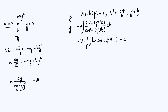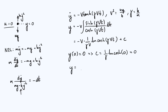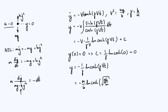We fix the constant using the initial condition y(0) = 0. Substituting, cosh(0) = 1 and ln(1) = 0, so the constant c = 0. Therefore y = −(1/γ)·ln(cosh(γVt)). Substituting back the original parameters, this becomes y = −(m/b)·ln(cosh(√(gb/m)·t)).